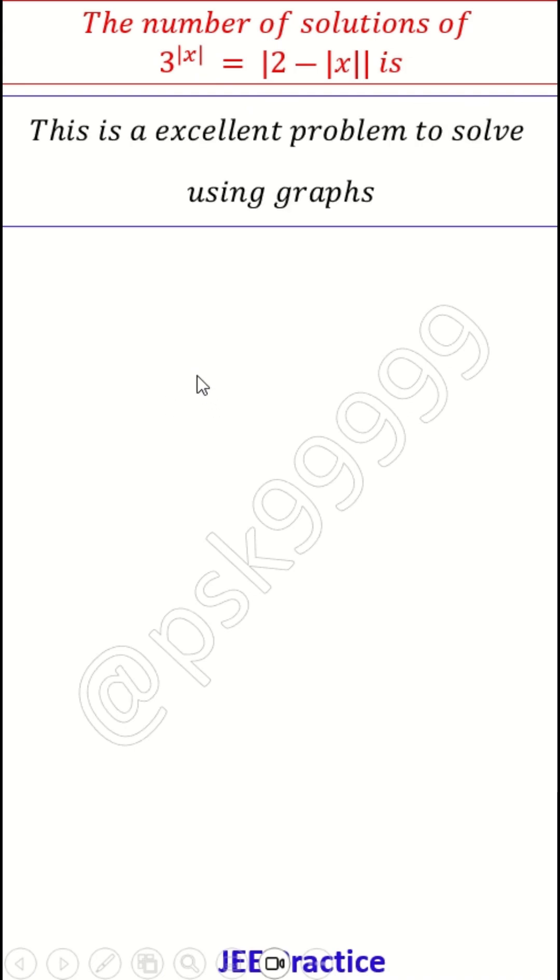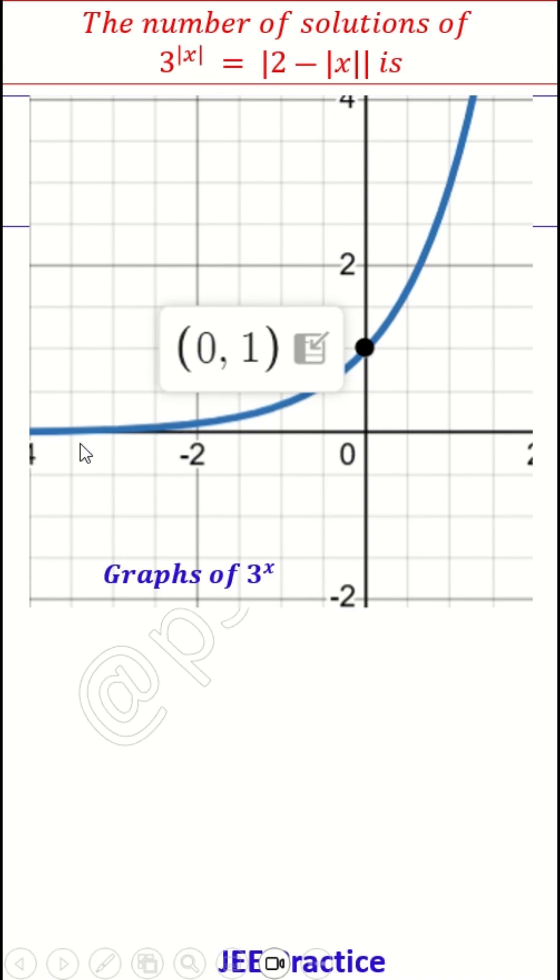Let us see, first let us draw 3 to the power of absolute x. This is how 3 to the power of x looks. 3 to the power of x is something like this. If x equal to 0, 3 to the power of 0 is 1. So 0 comma 1, it will intersect at the y axis. So this is how 3 to the power of x.